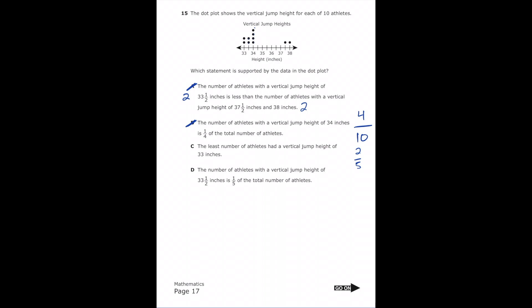Letter C says the least number of athletes had a jump height of 33 inches. The 33-inch mark had 2 dots, but 37.5 and 38 inches each had only 1, so letter C is not true. Letter D says the number of athletes with a jump height of 33.5 inches is one-fifth of the total. That's 2 out of 10 — dividing both by 2 gives 1/5, which matches. The correct answer is letter D.